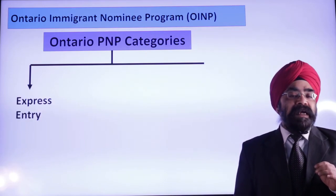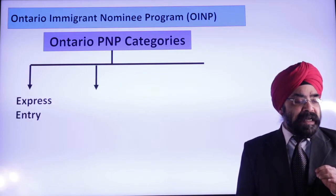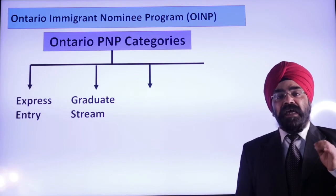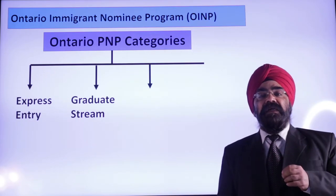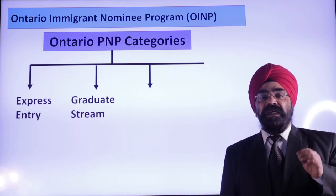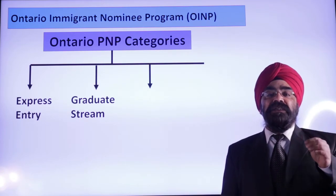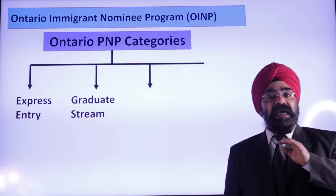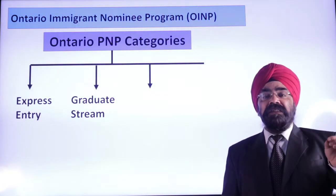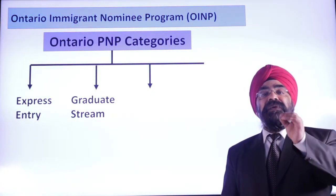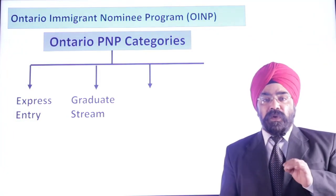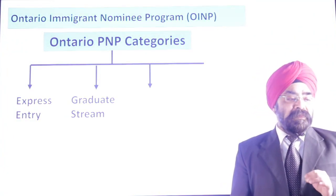The second category is Graduate Stream. As the name tells, these are people who graduate from Ontario universities or colleges — but not every program. Only Masters and PhD (doctorate) programs are counted under Graduate Stream.